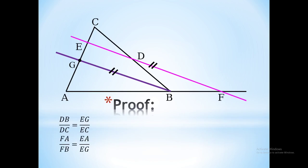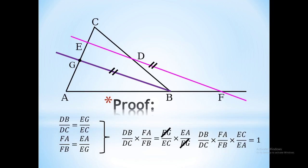Now, when we have those two equations or statements, we can multiply them to get that DB over DC times FA over FB equals EG over EC times EA over EG. After we eliminate those two factors that are the same and move the remaining factors to the left side of the equation, we get the statement of Menelaus' theorem.